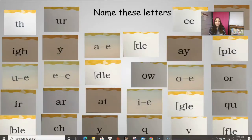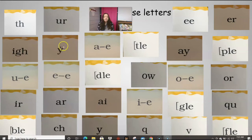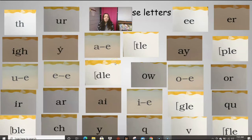All right, we're just going to quickly name our letter cards. Are you ready? We have digraph T-H, combination U-R, digraph E-E, combination E-R, trigraph I-G-H. Remember, what's that dot mean? Vowel Y, A consonant E, final syllable T-L-E, digraph A-Y, final syllable T-L-E, U consonant E, E consonant E, final syllable T-L-E, digraph O-W, O consonant E.